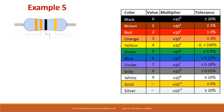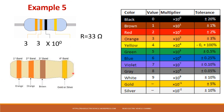Now take an example with two orange bands and one black. Orange is 3, orange is 3, and black means 10 power 0, which equals 1. So the resistor value is 33 ohms. Then take orange, orange, and brown: the first two digits are still 33, but brown means multiply by 10, so the value is 330 ohms.